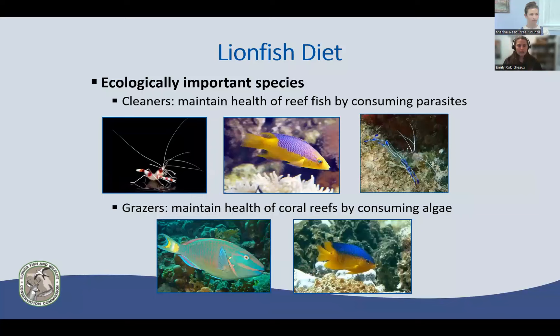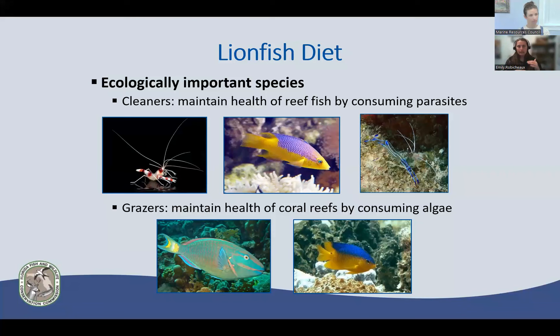Lionfish also prey on ecologically important species — grazers and herbivores that maintain ecosystem balance. While we don't see those as economically important, they're very crucial to ecosystem balance and coral health. Examples include parrotfish and wrasse, which remove algae that allows sunlight to reach coral — that's how coral photosynthesizes food. With this middle portion of the food web being removed, it leaves a gap. Combined with coral stress from heat last summer, when these herbivores aren't there to help graze, it adds another layer of stress that can ultimately lead to a dying ecosystem.